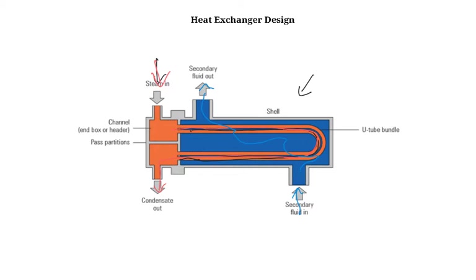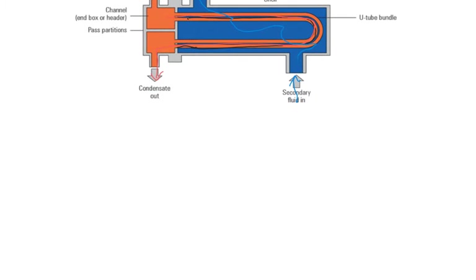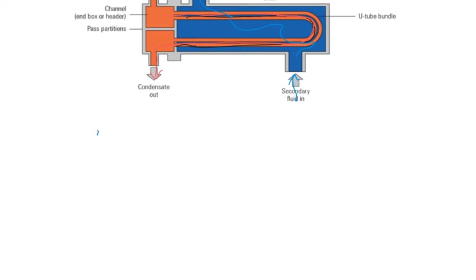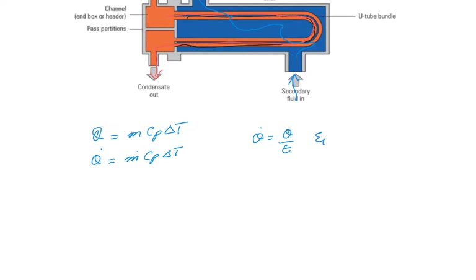We're going to start with the basic heat transfer equation. You will be familiar with Q equals M Cp delta T, where Q is the heat transfer, M is the mass, Cp is the specific heat at constant pressure, and delta T is the difference in temperature. We can write this as Q-dot equals M-dot Cp delta T, where Q-dot is the heat transfer per unit time.